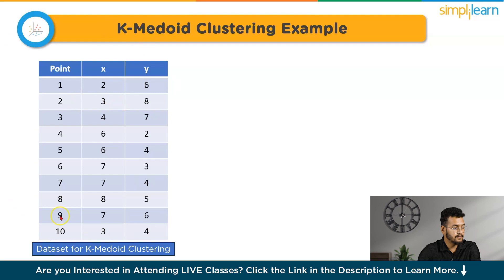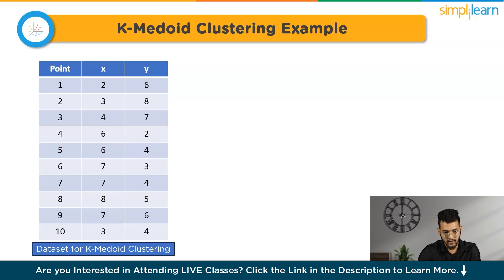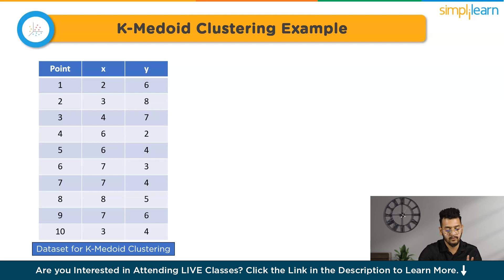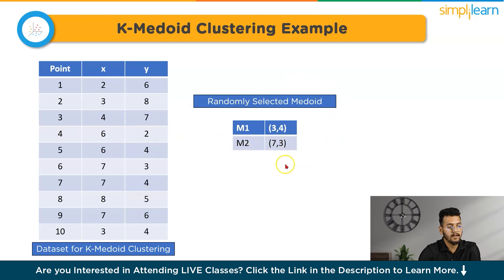Let's walk through an example of how K-Medoids works using a dataset table. The first step is to select K random data points from the dataset as medoids. We select two medoids: M1 at coordinates (3, 4) and M2 at coordinates (7, 3).